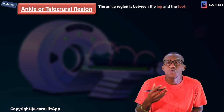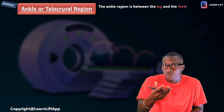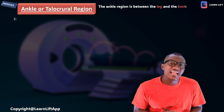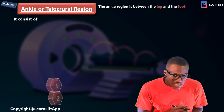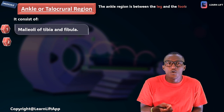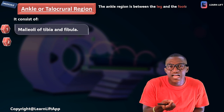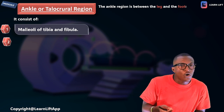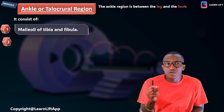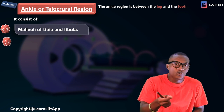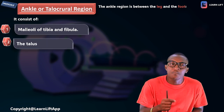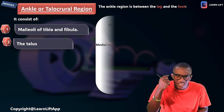Now let's talk about the ankle, also called the talocrural region. It is the region between the leg and the foot. It consists of: number one, the malleoli of the tibia and fibula — malleoli is the plural form — and number two, the talus bone.